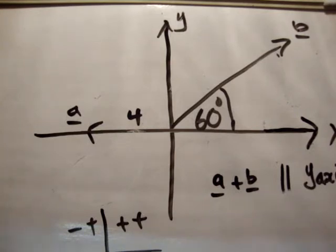So we've drawn our x and y axes, making our x and y plane, or our Cartesian plane. We've drawn the vector a on the left, and vector b at 60 degrees north of east.